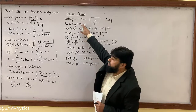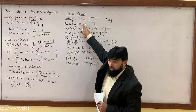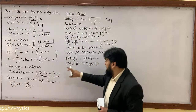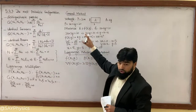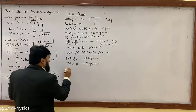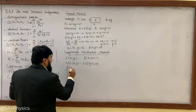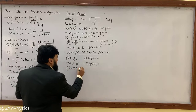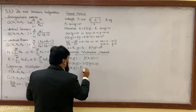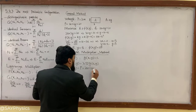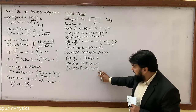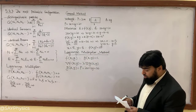Here there is one restriction, and because we have one restriction, we will use lambda-1 with f1. f1 is your restriction. The restriction is g(x, y), given in terms of perimeter, and this is equal to 2x plus 2y equals 20.